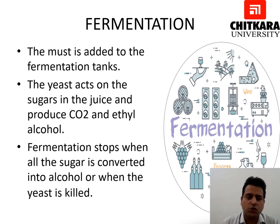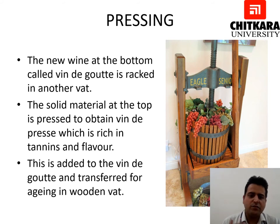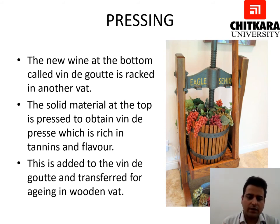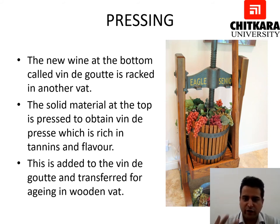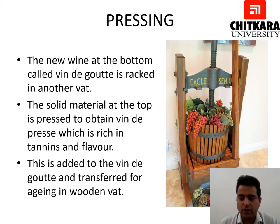Fermentation stops when all the sugar is converted into alcohol or when the yeast is killed. The next step is pressing. The new wine at the bottom of the tank, called vin de goutte, is racked into another container. The solid material at the top is pressed down to obtain vin de presse, which is rich in tannin and color. This is added to the vin de goutte and transferred for aging in a wooden vat. Traditional wooden pressing machines were used in the past, and automatic mechanical pressing machines are now available in vineyards.